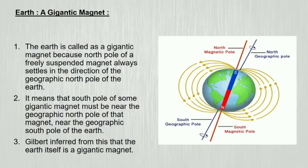It means that the south pole of some gigantic magnet must be near the geographical north pole and the north pole of that magnet near the geographical south pole of the Earth. Gilbert inferred from this that Earth itself is a gigantic magnet.